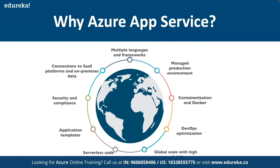Additionally, you can take advantage of DevOps capabilities like continuous deployment from Azure DevOps, GitHub, Docker Hub, and other sources. This also includes package management, staging environment, custom domain, as well as TLS/SSL certificates. With app service, you will only pay for the Azure compute resources that you use, which are determined by the app service plan you choose.